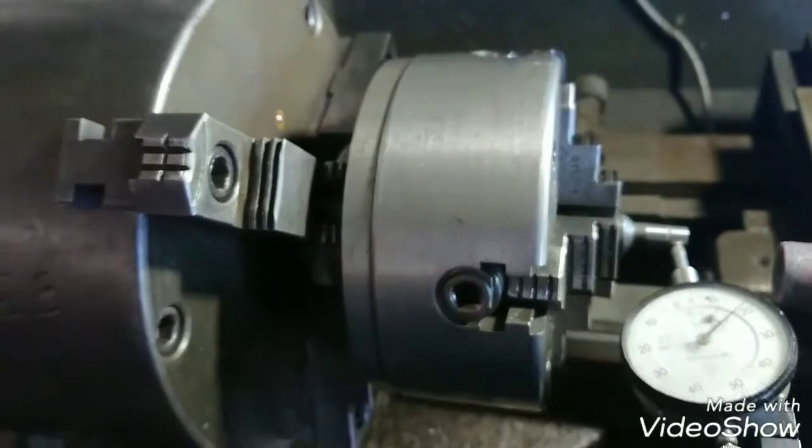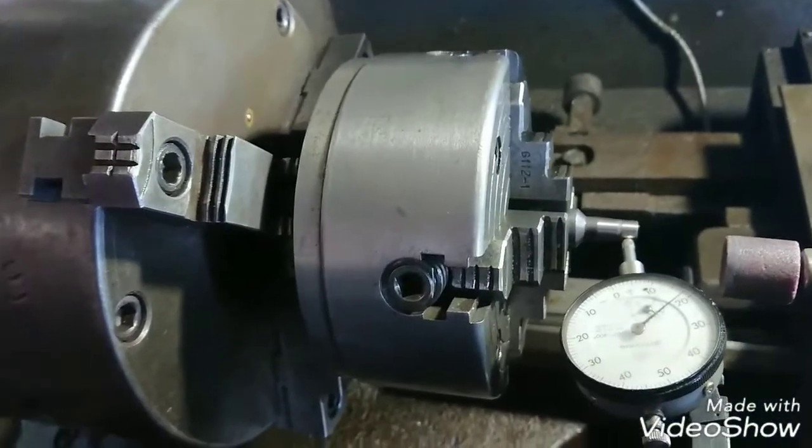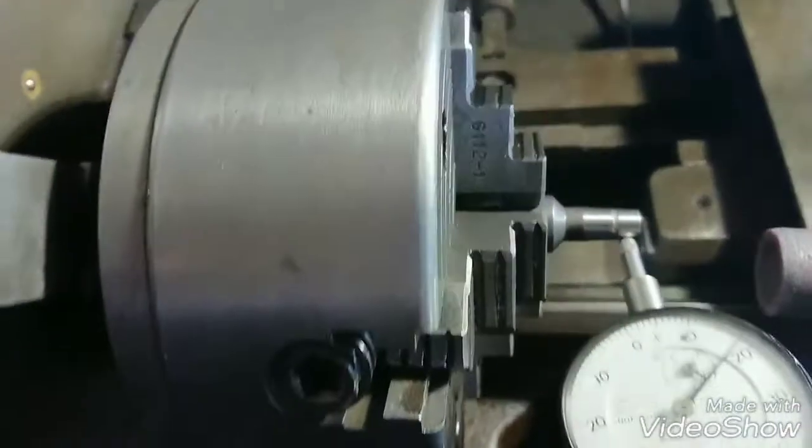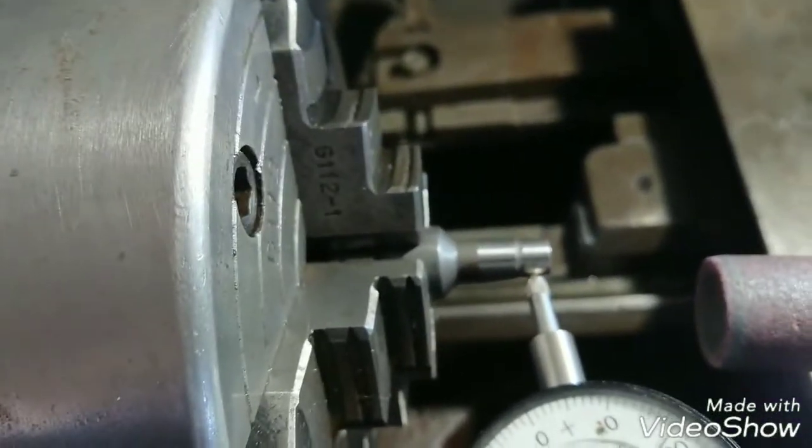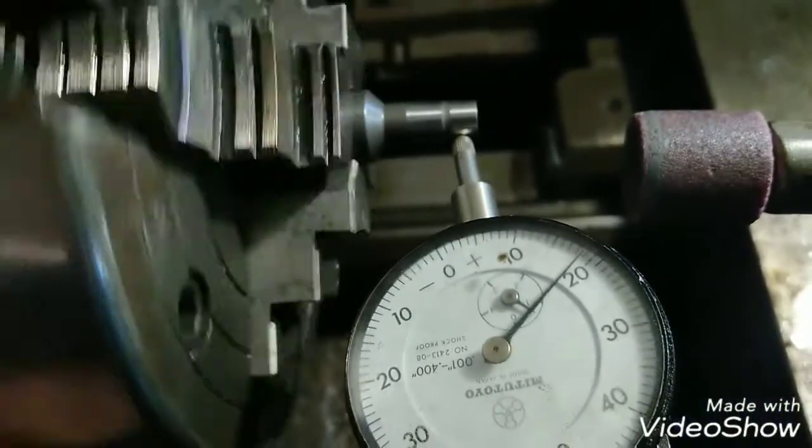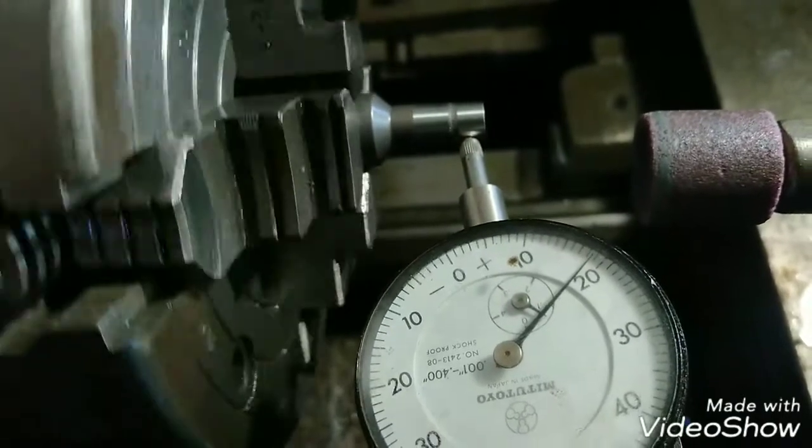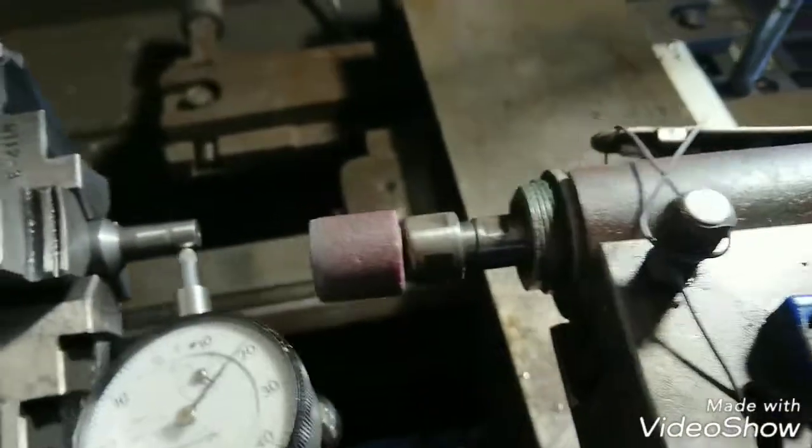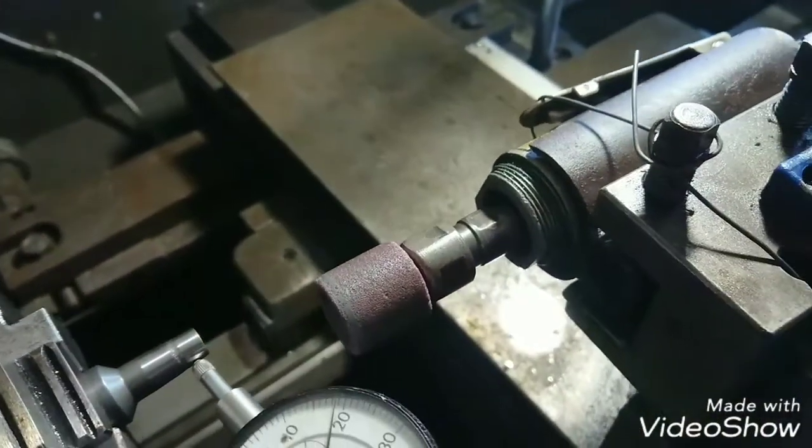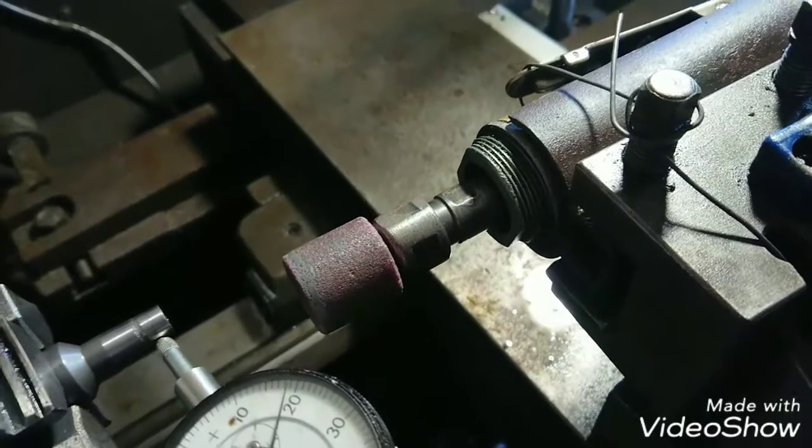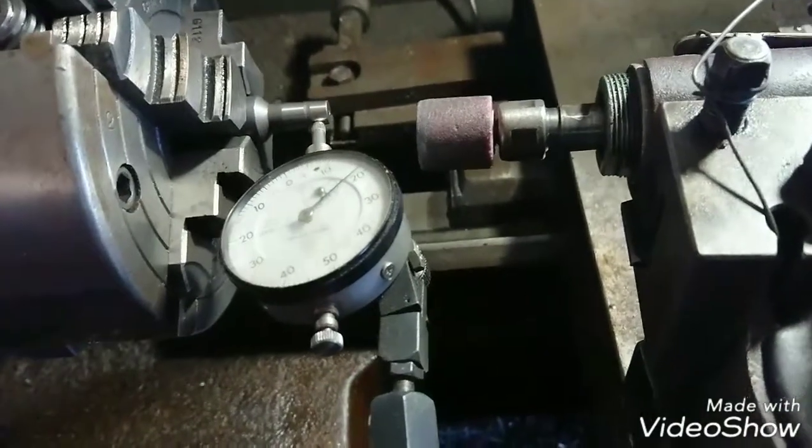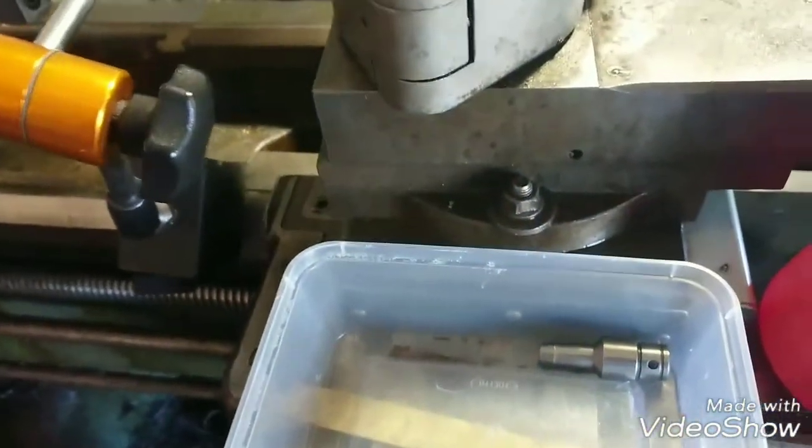I've got the four jaw mounted into the three jaw. I've got this one set up, so she's running pretty true, within about a tenth of a thou or so. I've got the die grinder mounted in the tool post. The compound is set at just about three degrees I think it is.